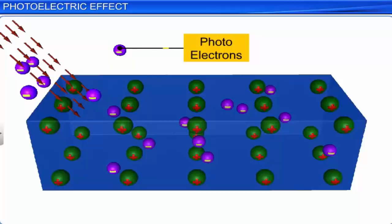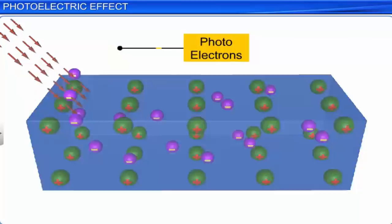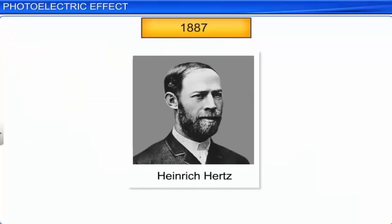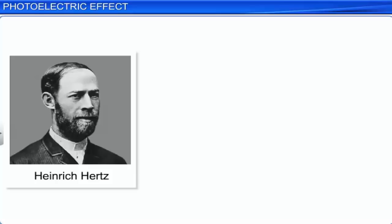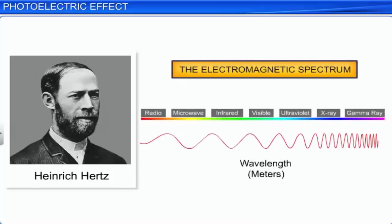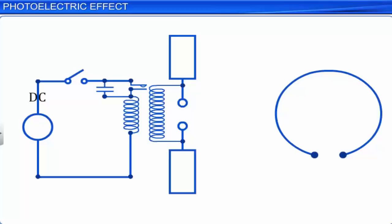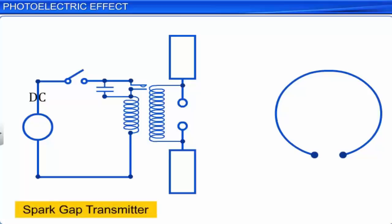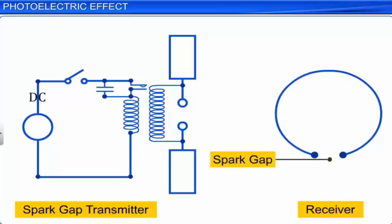The history of the photoelectric effect dates back to 1887, when this phenomenon was accidentally discovered by Heinrich Hertz. Hertz was investigating the production and reception of electromagnetic waves through an experimental setup, which consisted of a spark gap transmitter and a receiver in the form of a coil with a spark gap placed at some distance from the transmitter.